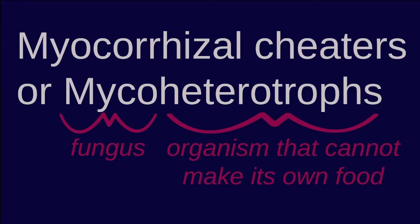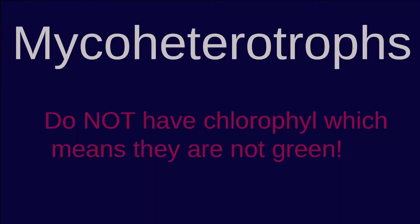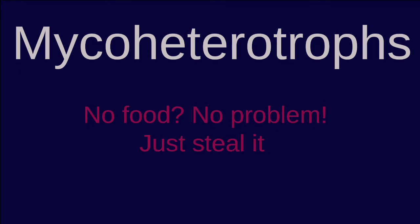So back to Spores More's question — what are mycorrhizal cheaters? Another word for them is mycoheterotrophs. They are plants that get their carbohydrates or food via mycorrhizal fungi's association with other plants. They lack chlorophyll, which is what allows most plants to photosynthesize or convert light energy into chemical energy. Instead of getting their food from the sun, they steal carbon from the mycorrhizal connection of a neighboring plant. Unlike most mycorrhizal fungi relationships, mycoheterotrophs do not give anything in return for the carbon.